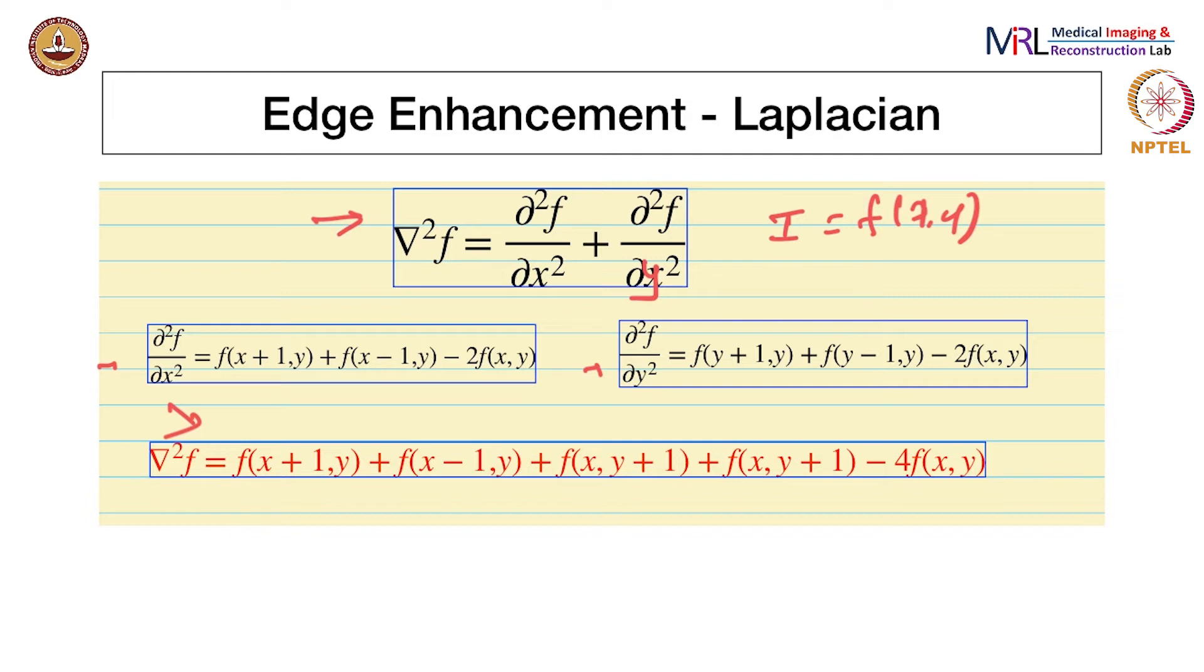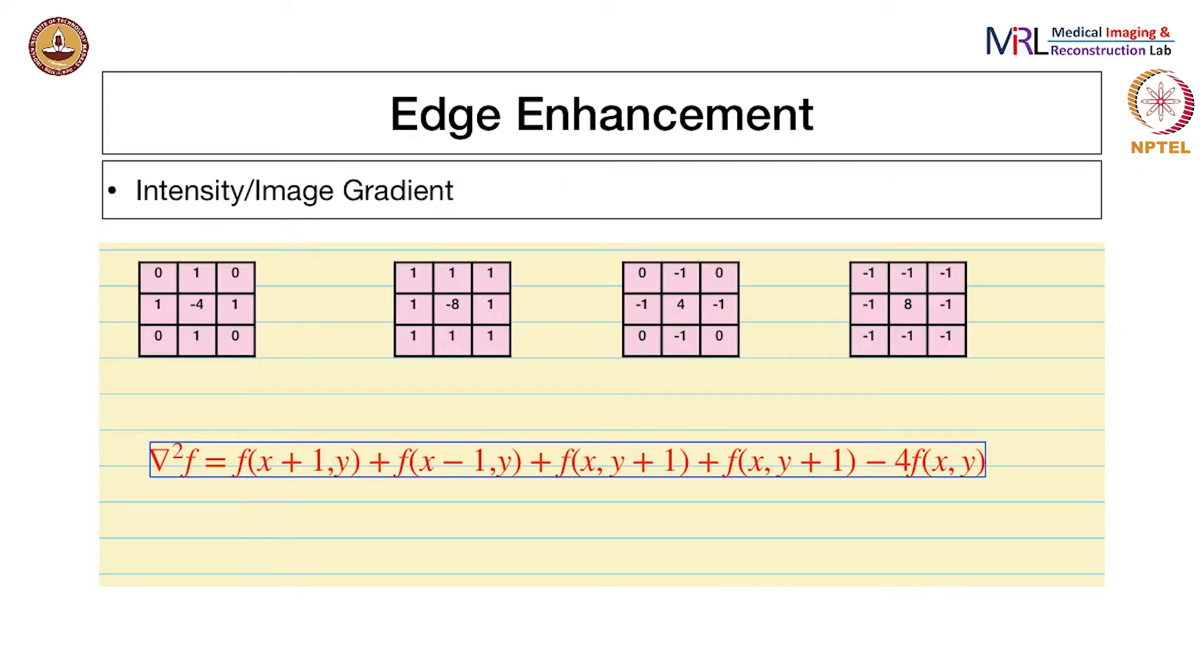This is implemented using convolutions. If you look at this formula carefully, there's f of x plus 1 comma y, which means if you're considering x comma y to be the current pixel and trying to evaluate the Laplacian at that point, you look to the right which is x plus 1 with coefficient 1. Sorry, there's a mistake here - this should be y minus 1.